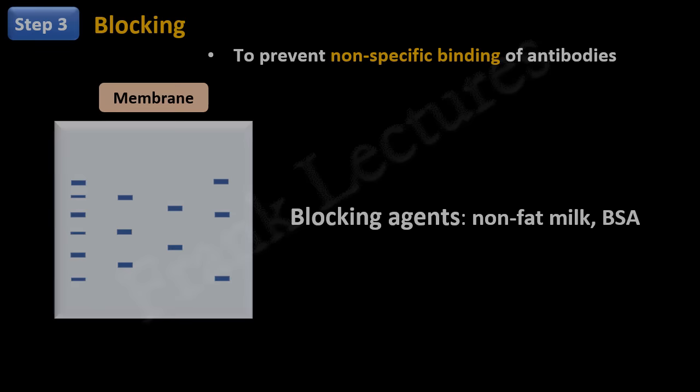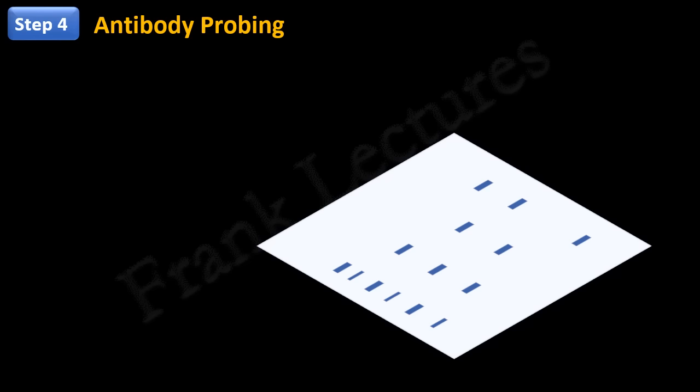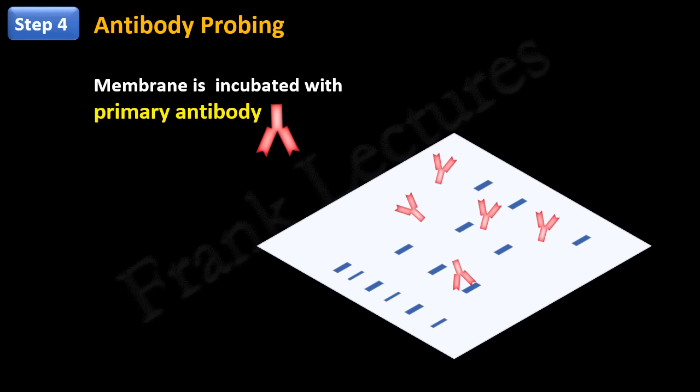Next step is antibody probing. After the blocking step, the membrane is incubated with primary antibody. Since this antibody is specific to our target protein, it will bind to the protein on the membrane. After this, excess of primary antibodies are removed by washing.